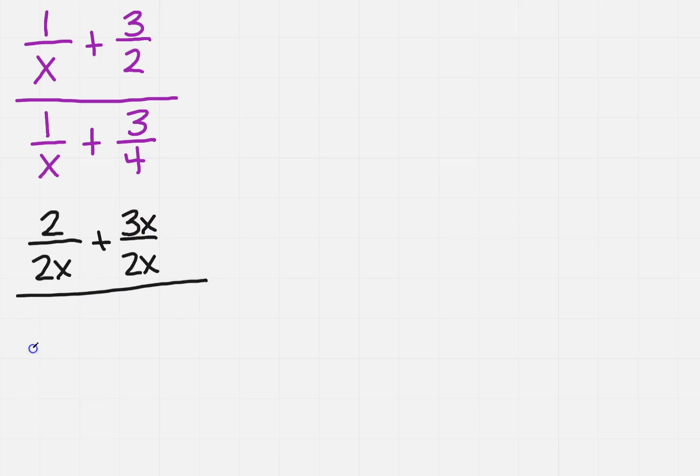And then I want to do the same thing on the bottom. This time the common denominator is 4x, so the first one I had to multiply by 4 and the second one I had to multiply by x.